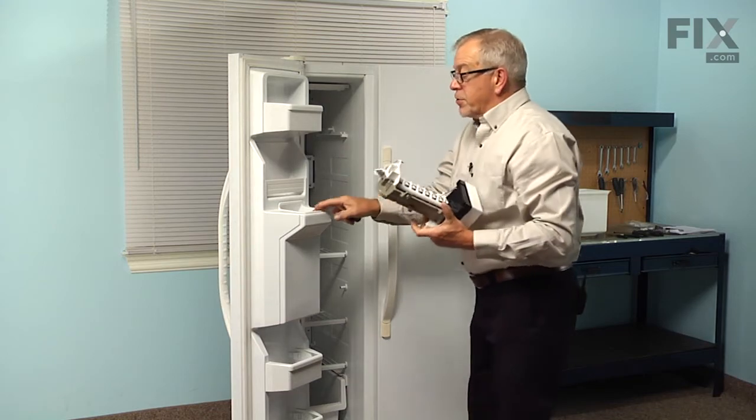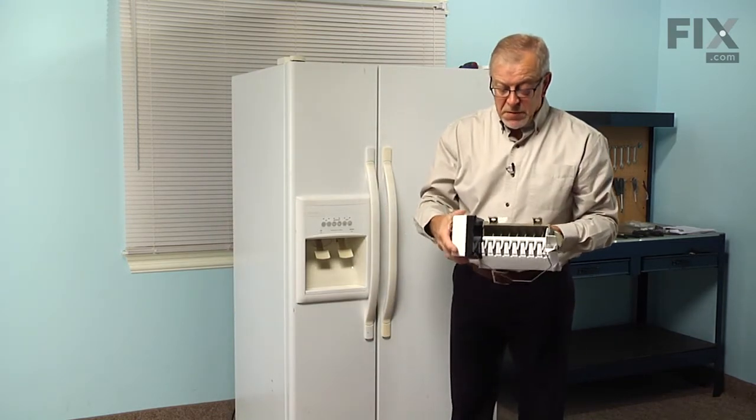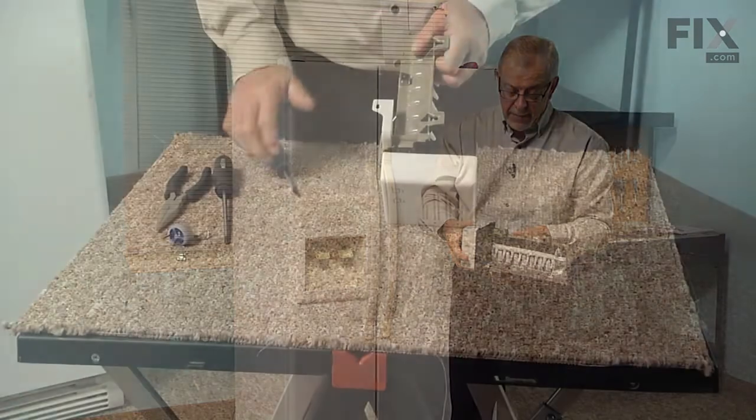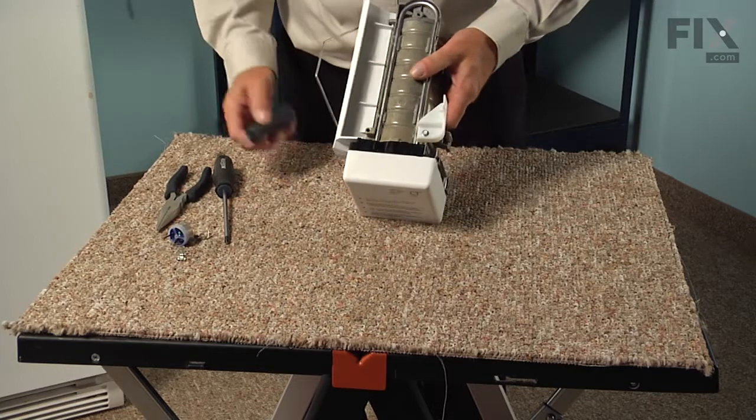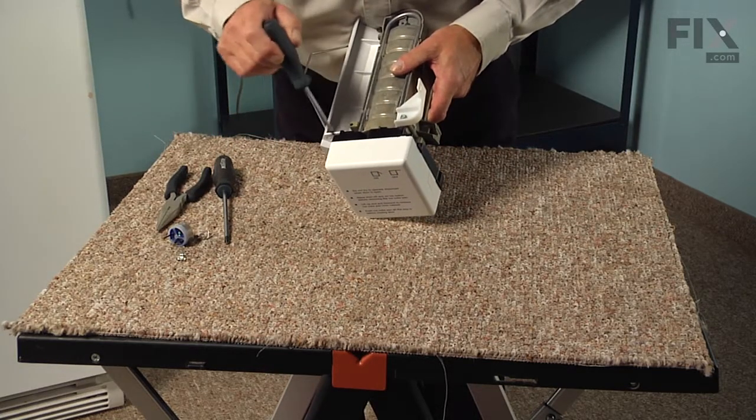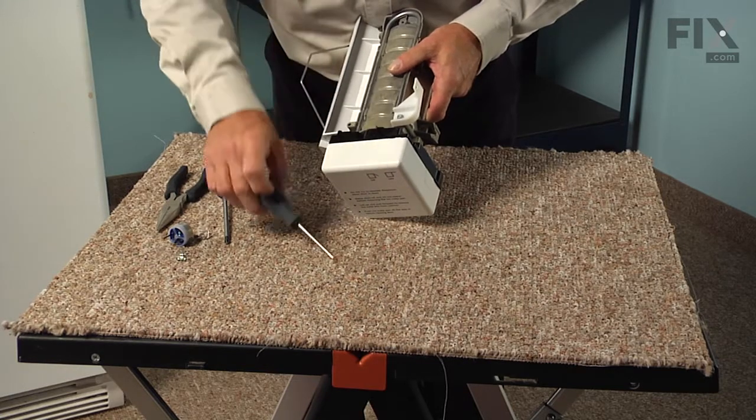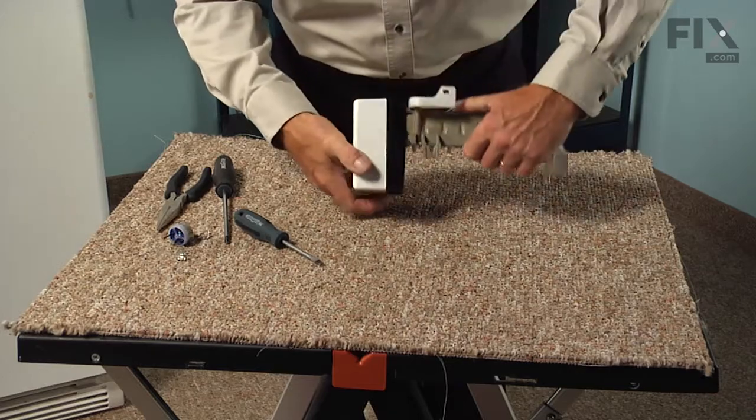We can then close our freezer door up and we'll set the ice maker on a suitable work surface where we can change that thermostat. Now if you didn't have to remove that cover to get the harness off, we'll next need to take it off. So take a flat blade screwdriver and on the bottom there will be a couple of little slotted openings to fit the screwdriver in and then you can pop that cover right off.